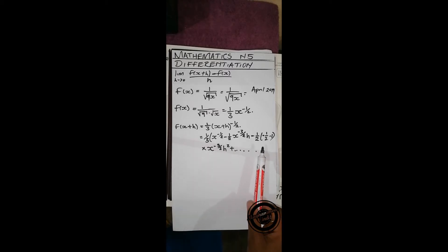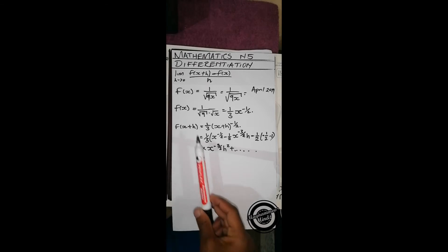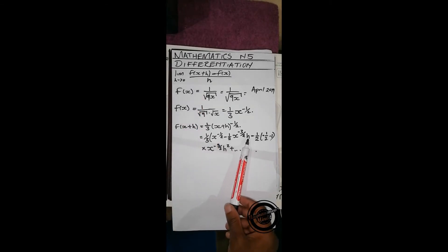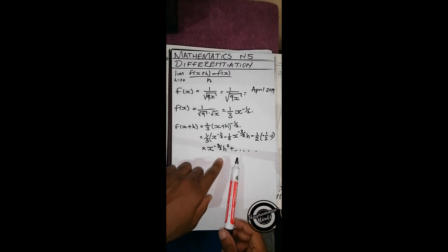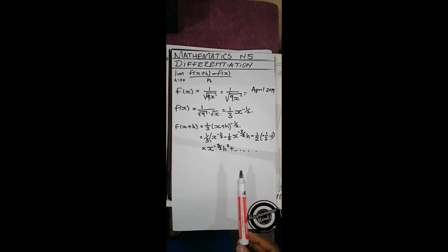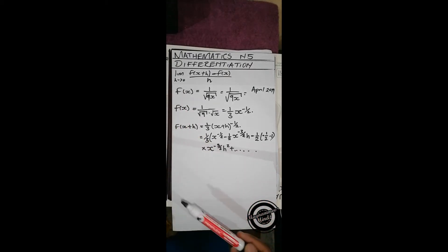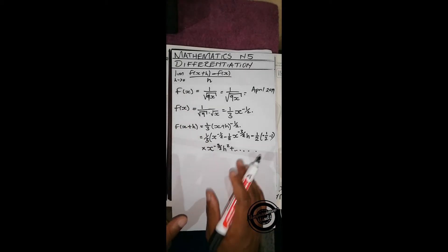When applying the binomial theorem while differentiating using the first principle, we only need the first three terms. This is because when we factor out h, any h squared term will leave an h behind, and when we plug in zero for h, those remaining terms all become zero. So the higher order terms are more or less useless, and we leave the expansion at that point.